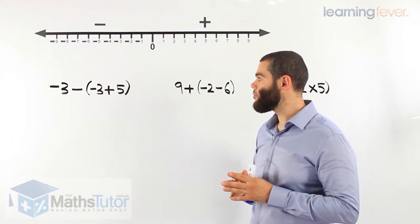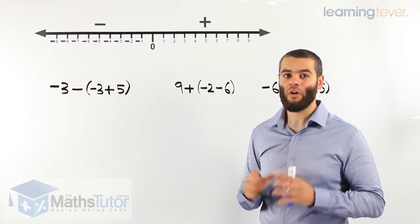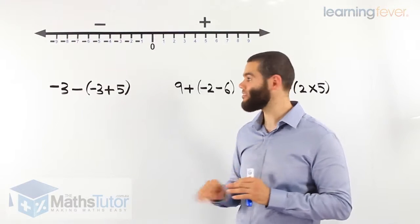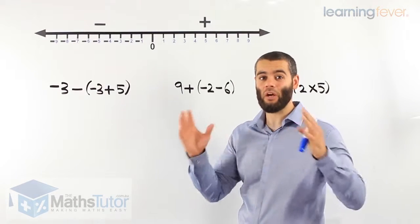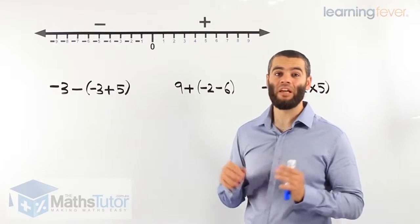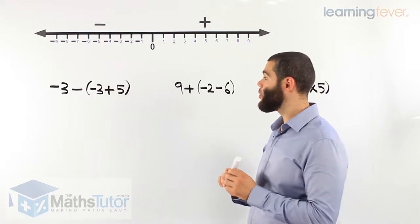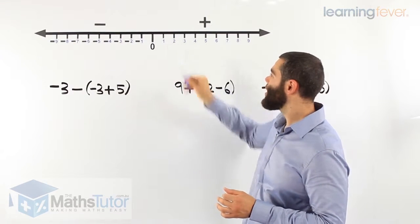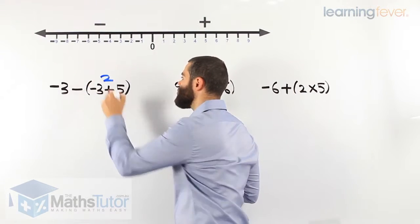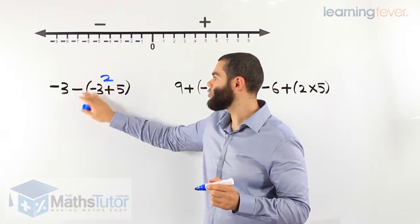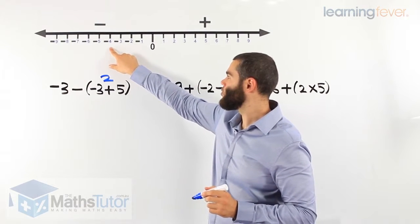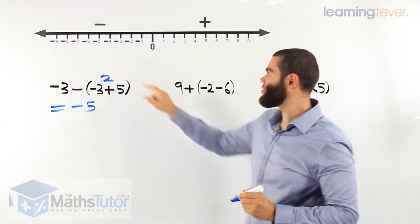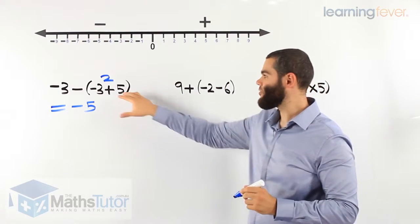In this example we have negative 3 minus, in brackets, negative 3 plus 5. We need to follow the order of operations — brackets, division, multiplication, addition, subtraction — so we complete the brackets first. In the brackets: negative 3 plus 5. We start at negative 3 and add 5 going right: 1, 2, 3, 4, 5 — answer is 2. Then we have negative 3 minus 2. We start at negative 3 and minus 2: 1, 2. Our final answer is negative 5.